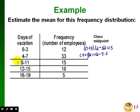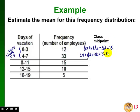The class width is four, so adding four to 1.5 gives 5.5, then 9.5, then 13.5, then 17.5 — those are all our class midpoints. Now for each class midpoint, we multiply it by the frequency for that class. The first class: 12 times 1.5 equals 18. The second: 33 times 5.5 equals 181.5. The third: 15 times 9.5 equals 142.5. The fourth: 10 times 13.5 equals 135. The fifth: 5 times 17.5 equals 87.5.